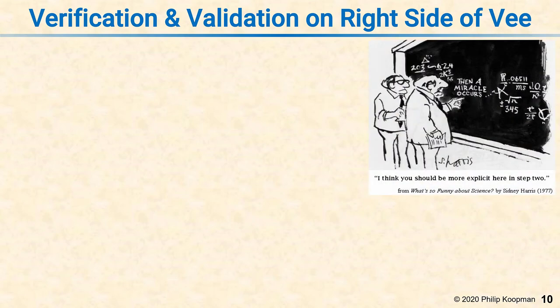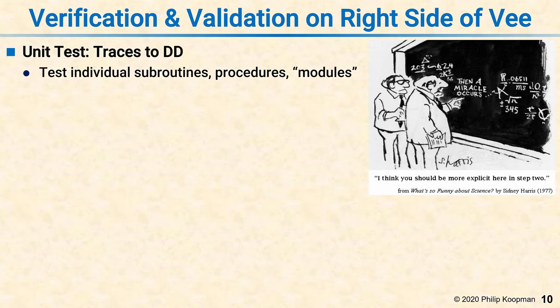Now let's move on to the right side of the V — verification and validation. As you recall, the bottom of the V is implementation, which puts out the source code. What you do next is unit test. Unit test involves testing individual subroutines, procedures, modules, and small chunks of code. Because it's a small chunk of code, it's possible to test it very thoroughly and make sure every statement and every branch gets executed and tested, which is something that's generally impractical to do at higher levels of integration.